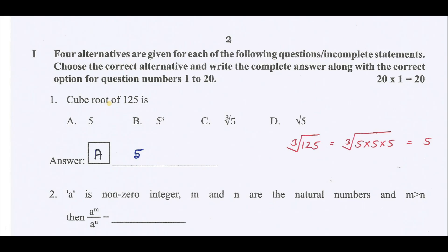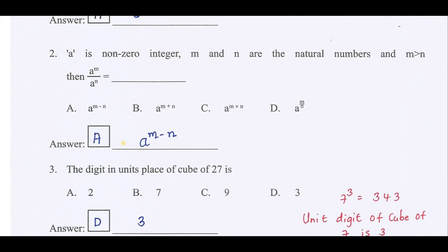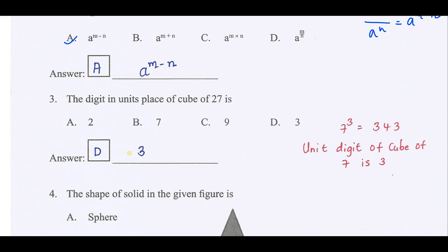The first question: the cube root of 125 is 5 into 5 into 5, which is 125. Therefore the cube root of 125 is 5. The correct answer is option B. If a is a non-zero integer, m and n are natural integers, then when m is greater than n, a power m by a power n equals a power m minus n. Therefore the correct answer is option A. The digit in unit place of cube of 27: the unit digit of 27 is 7. Now 7 cube is 343. Therefore the unit digit of cube of 7 is 3, so the cube of 27 will also be 3. The correct answer is option D.